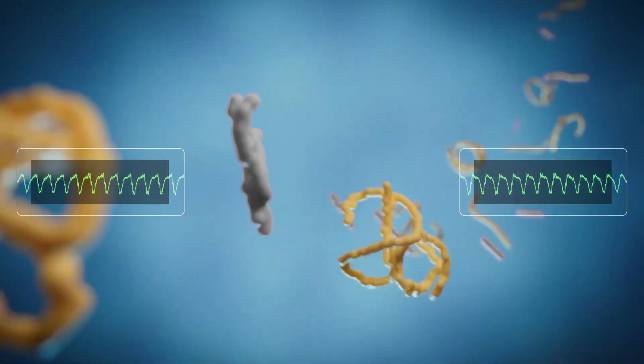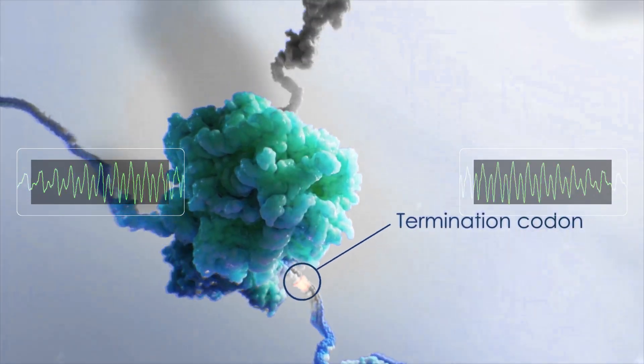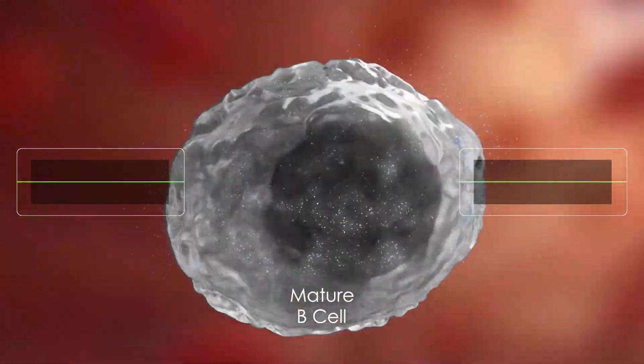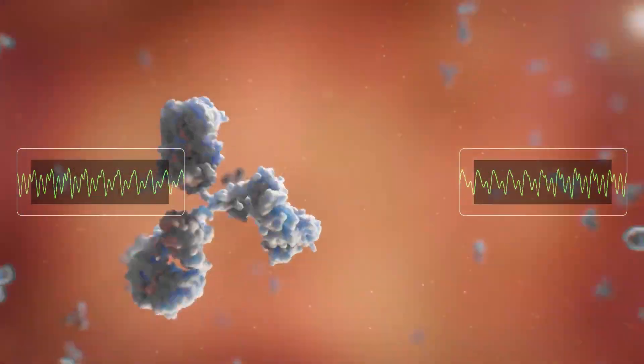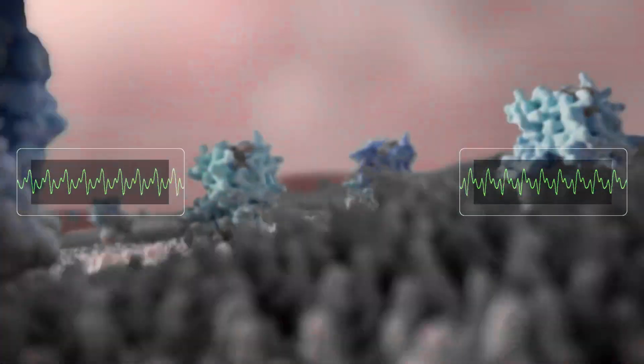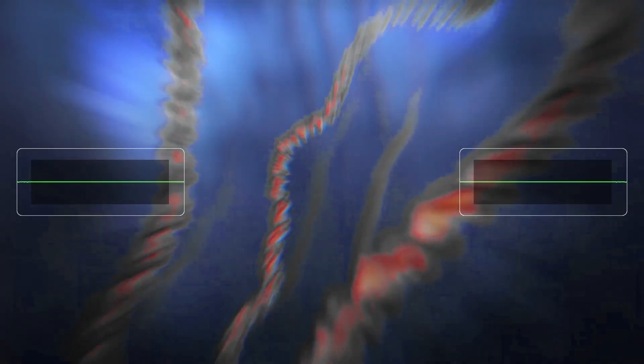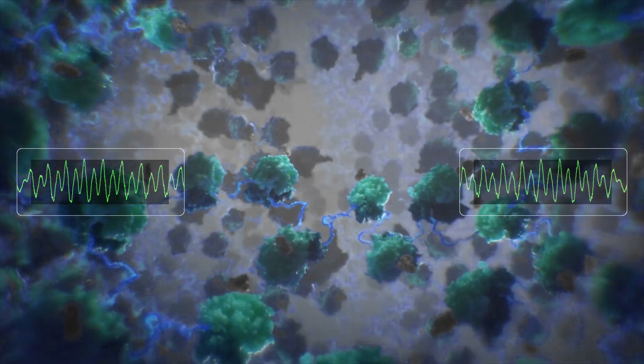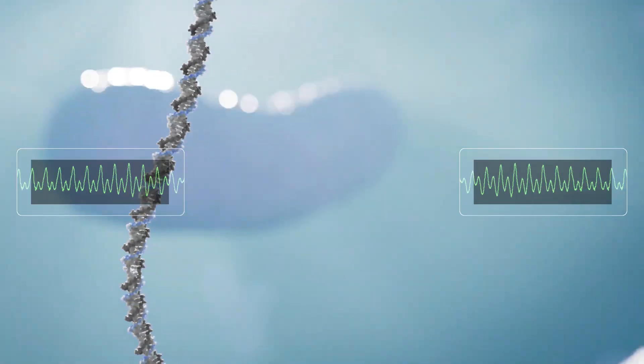According to the Cleveland Clinic, an American non-profit academic medical center, an mRNA vaccine trains your body to fight infectious diseases by delivering instructions to make a small, harmless part of the virus. This teaches the immune system how to respond if it encounters the virus again.